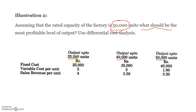This is the first case at the 25,000 output level. In this situation, fixed cost will be 25,000, variable cost per unit is 2, and sales revenue per unit is 4. Then if the level of output is 40,000 units, the fixed cost will be increased by 10,000, totaling 35,000. Variable cost per unit remains the same at 2, and sales revenue is 3.5.